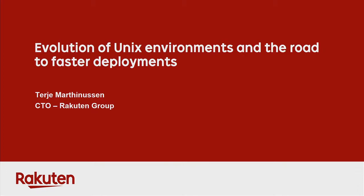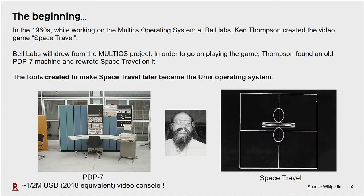I'm going to step a few — well, a few ten years back — to where Unix, which is what serves most of internet services today, started. In the mid-60s, a guy called Ken Thompson was working on the Multics operating system at Bell Labs. One of his side projects was to create a game called Space Travel, and when Bell Labs decided to stop working on the Multics project, he wanted to keep on playing his game, so he found an old PDP7 microcomputer and re-implemented his game on it.